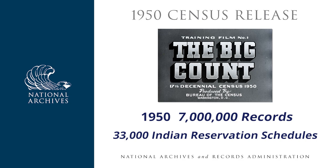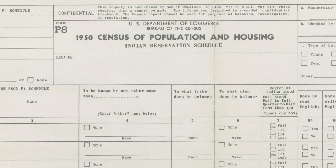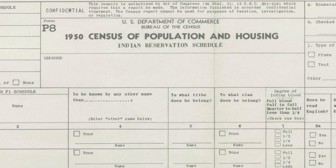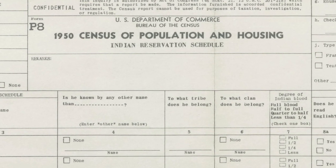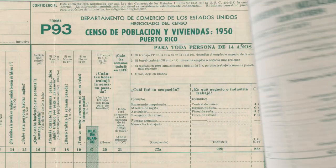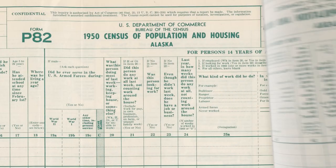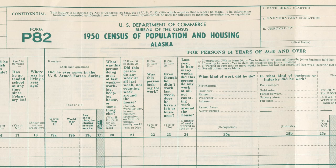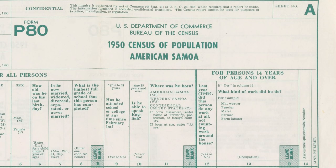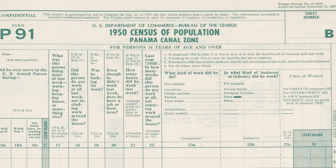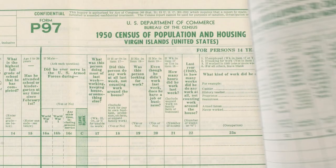Users can search the 1950 census population schedules by name and location, and the Indian reservation schedules are searchable by reservation. In addition to the continental United States, the 1950 census also includes the U.S. territories and possessions of Alaska, American Samoa, Guam, Hawaii, the Panama Canal Zone, Puerto Rico, and the U.S. Virgin Islands.